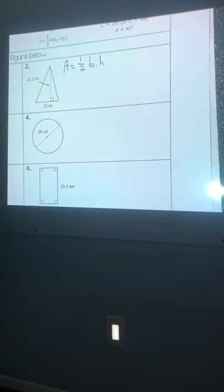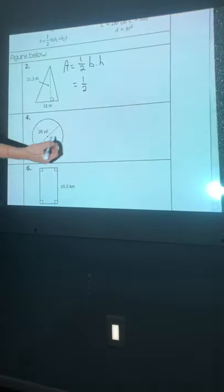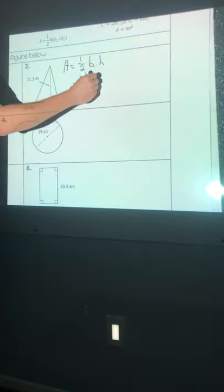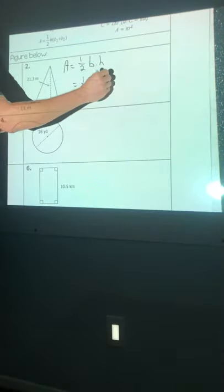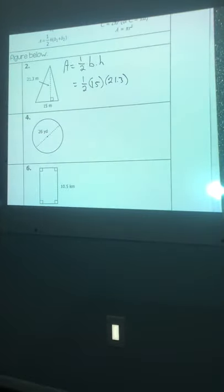The easiest way to find the base and the height is just look for that 90 degree box. This 90 degree box connects your base, which is 15, to this dotted line, which is going to serve as the perpendicular height. All you got to do is plug and chug these numbers in. So I plug in 15 for the base. I'm going to plug in the 21.3 for the height. And all you got to do is multiply that out.